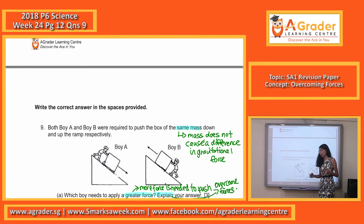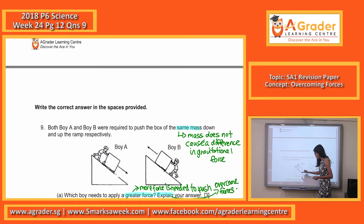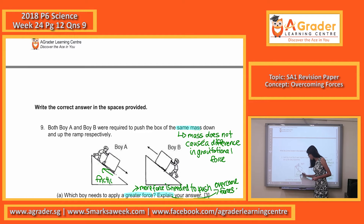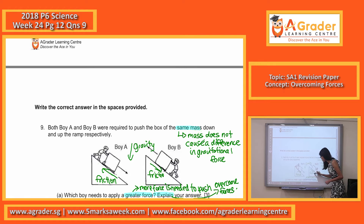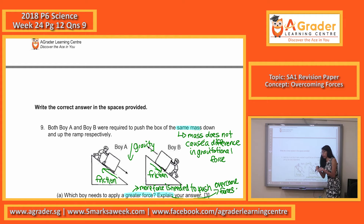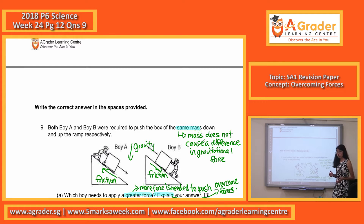Let's look at boy A. Always identify what kinds of forces are acting upon each individual case. There is always friction and there is always gravity. Boy A is moving downwards and is not going against gravity. While you still have to overcome friction, boy A doesn't need to overcome gravitational force.